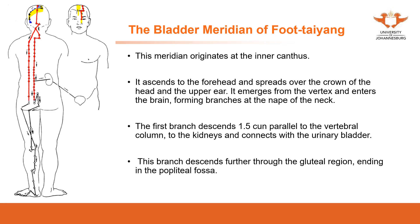Forming branches at the neck, there is one branch that sends 1.5 cun parallel to the vertebral column. This branch links to the kidney and connects with the bladder, then descends further through the gluteal region, ending in the popliteal fossa. This medial line goes all the way down and ends there.